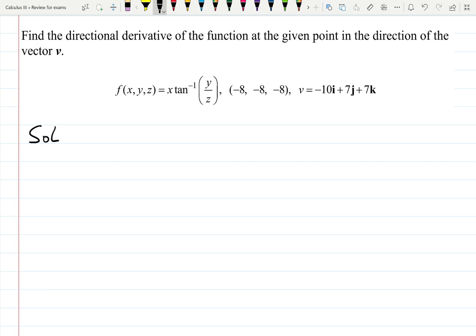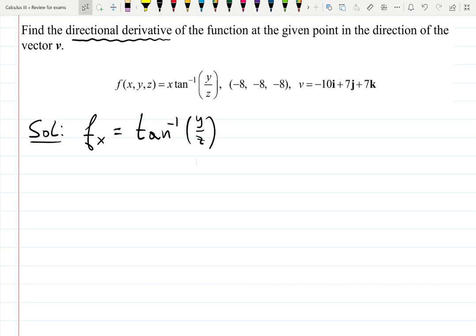As always, we start with finding partial derivatives. Because directional derivative means finding derivatives, and we have derivative with respect to x, y, and z in this case. Derivative with respect to x is arctangent y over z, because arctangent and y over z is constant.